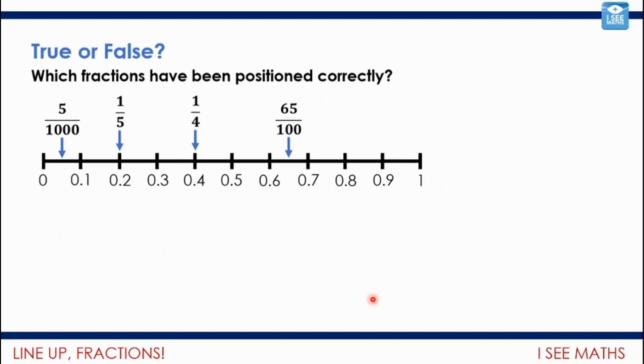Now have a look. Which fractions have been positioned correctly on this number line? Pause the video and see if you can see. Okay, and if you're ready, let's have a look. I'm actually going to start with five thousandths and sixty-five over a hundred. Well, 0.1, like we said, is one tenth. So halfway is actually five hundredths, not five thousandths. So this one is incorrect. And sixty-five hundredths is correct, because this would be six out of ten, or sixty out of a hundred. That would be seventy out of a hundred.